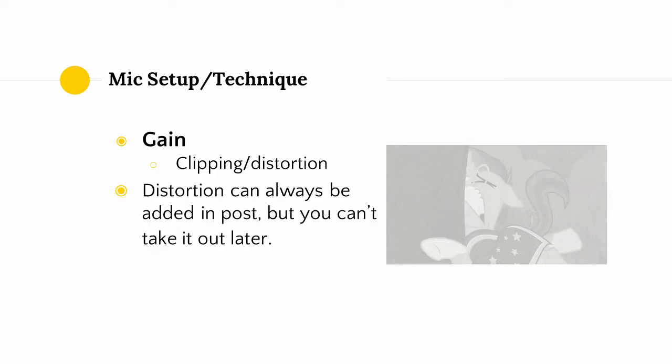Another variable to consider in our mic setup or technique is how we set our gain levels or volume levels. The number one thing we want to avoid when recording is clipping — harsh-sounding audio distortion that is introduced when the volume levels of our sound exceed the maximum bounds that can be processed by our computer. Just like with reverb, you can always add distortion in post, and it can be used as an artistic effect. However, if you bake it into the recording, there's no way to get it out. And that concludes the recording section.